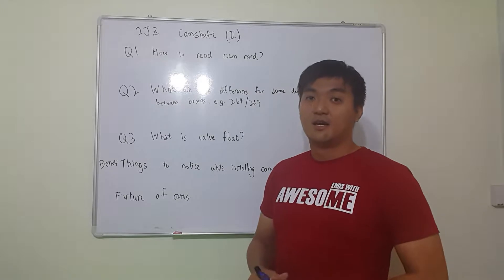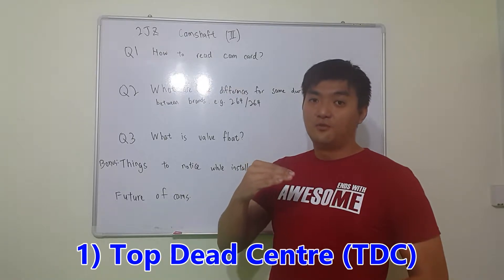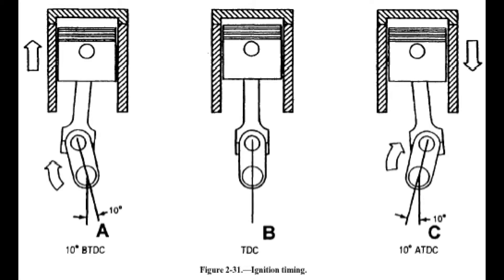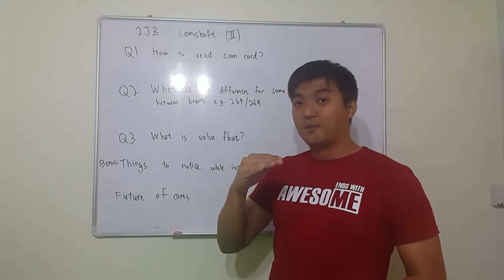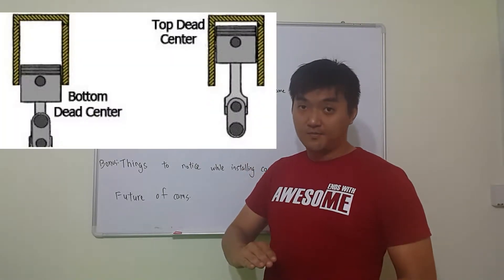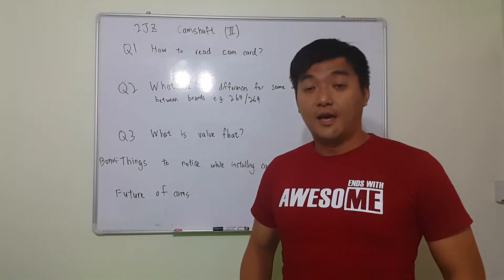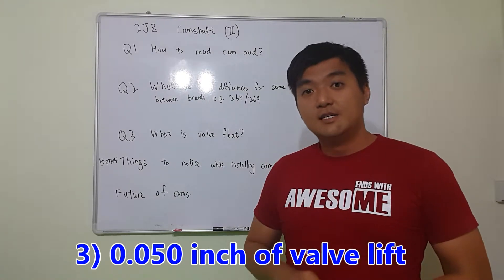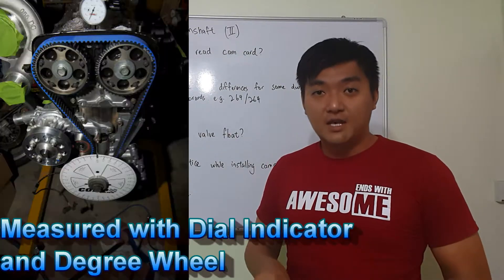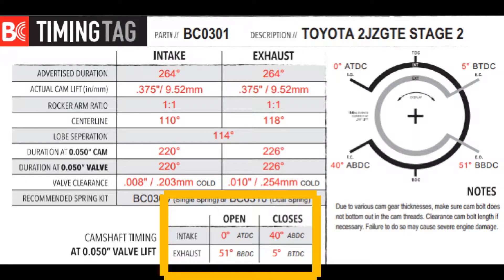The first one is top dead center. That means the piston reaches the top and then it cannot move any further. And then the other one is bottom dead center. That means the piston travels to the most bottom, to the lowest point, and then it cannot travel any further down. And the third thing is the 0.05 inch of lift when the cam just started to open the valve and just before ending lifting the valve.